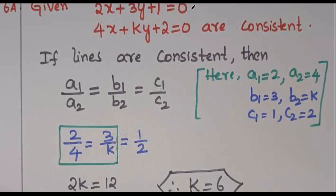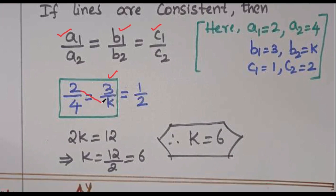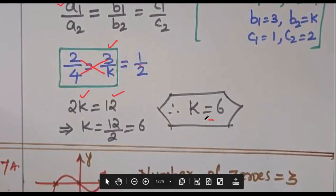Question 6: Lines 2x plus 3y plus 1 equals 0 and 4x plus ky plus 2 equals 0 are consistent and dependent. Find k. If lines are consistent and dependent, then a1/a2 equals b1/b2 equals c1/c2. Here 2/4 equals 3/k. Cross-multiplying: 2k equals 12, so k equals 6.